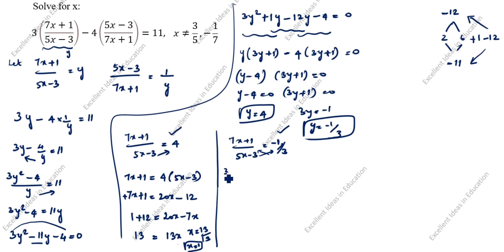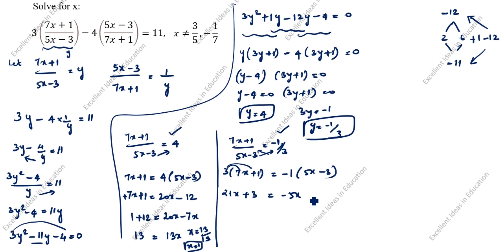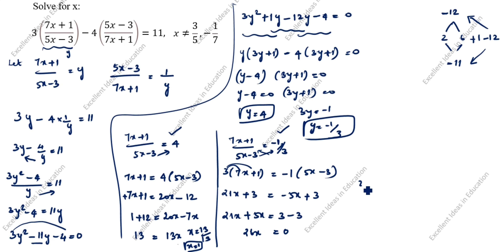Substituting y = -1/3: (7x + 1)/(5x - 3) = -1/3. Cross-multiplying: 3(7x + 1) = -1(5x - 3), so 21x + 3 = -5x + 3. Bringing x to one side: 21x + 5x = 3 - 3, so 26x = 0, giving x = 0. Therefore the two solutions are x = 1 and x = 0.